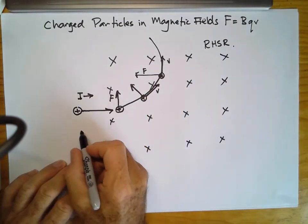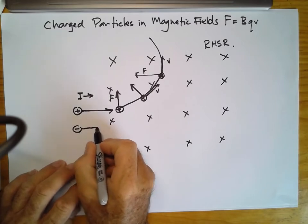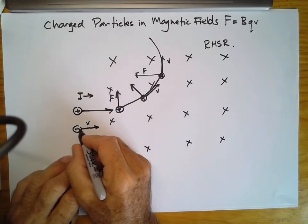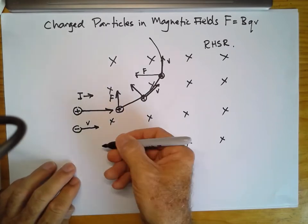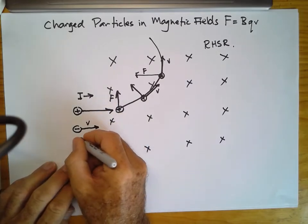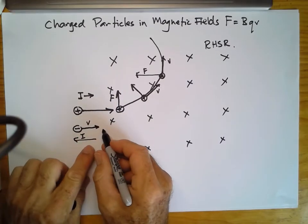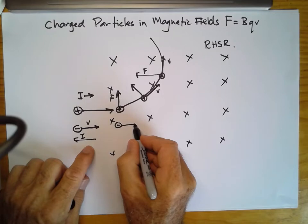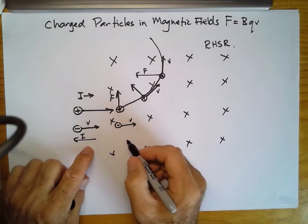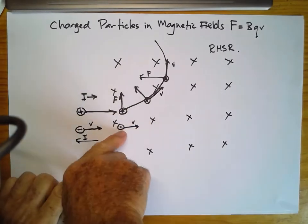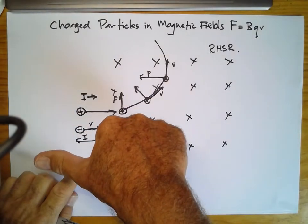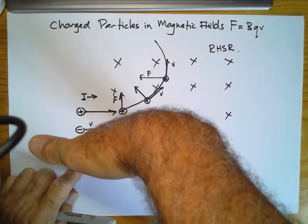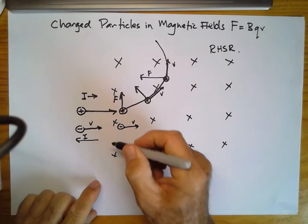Similarly, if we inject a negative particle into this magnetic field, a negative particle moving in this direction is equivalent to a conventional current moving in the opposite direction. Using the right-hand slap rule to find the direction of force on this negative particle moving in this direction: the equivalent conventional current goes this way, the magnetic field is into the board, and this negative particle therefore experiences a force downwards.